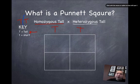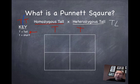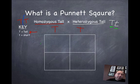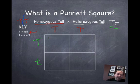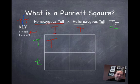The other parent is heterozygous tall, and the genotype would be one big T and one little t. Heterozygous means different or hybrid, so we get one dominant trait and one recessive trait. We need to show that on the outside — big T, little t. Then we're going to combine these different columns, like battleship. In the first box, we put a big T from the top and a big T from the side, so the genotype of this potential offspring would be big T, big T — homozygous tall.